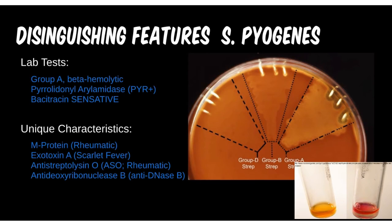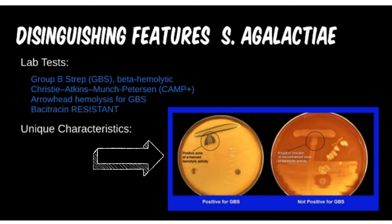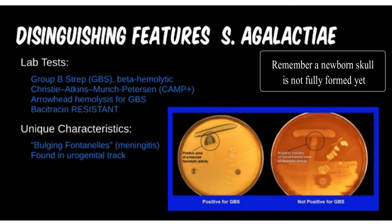Group B strep has a few unique lab tests. The CAMP test, which tests for protein B, will show increased arrowhead hemolysis on agar. Both GBS and Group A strep are beta-hemolytic, so that factor alone isn't enough to tell them apart. If a culture is bacitracin-resistant on sensitivity testing, we can lean towards GBS. If your newly delivered patient shows bulging fontanelles, find out if the mother was tested for GBS before delivery, and consider meningitis.